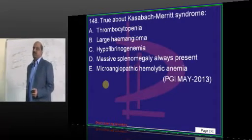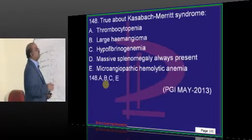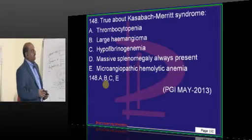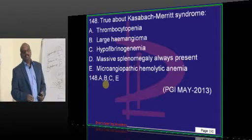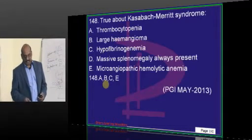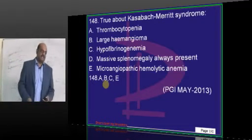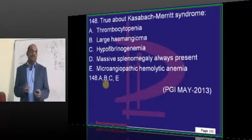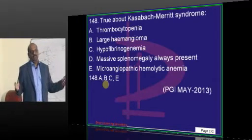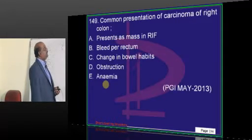Kasabach-Merritt syndrome — there is a huge hemangioma in which all platelets are sequestered, and that leads to development of thrombocytopenia. So: large hemangioma, thrombocytopenia, hypofibrinogenemia. There is a consumptive coagulopathy which will occur, and there is also microangiopathic hemolysis when the RBCs are being destroyed inside such a huge hemangioma. But there will be no massive splenomegaly.